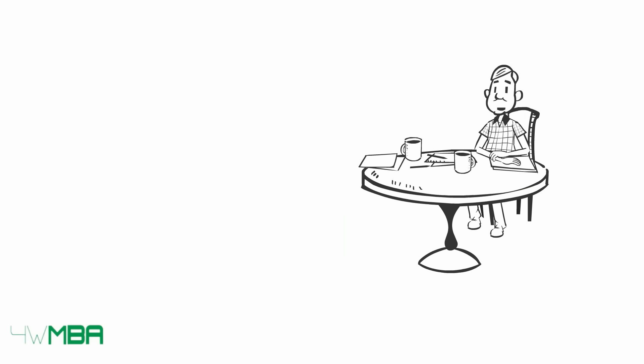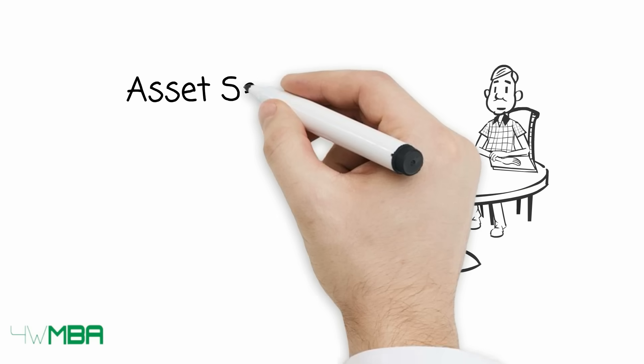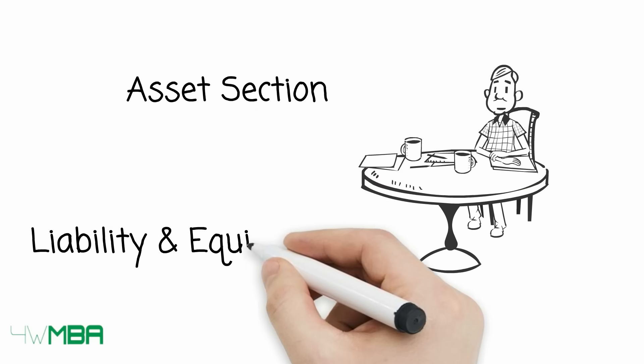We saw in the accounting equation video that the balance sheet is divided into two main sections: the asset section and the liability and equity section.